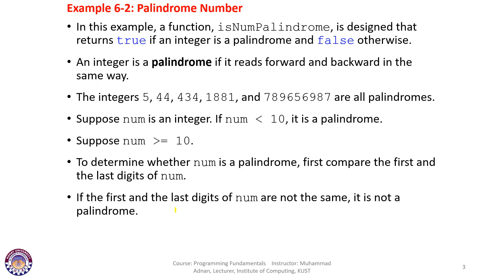If the number is less than 10, it is straight away a palindrome. But if the number is greater than or equal to 10, we have to determine whether it is a palindrome. First, we compare the first and the last digit of the number. If the first and last digits are not the same, then it is not a palindrome.